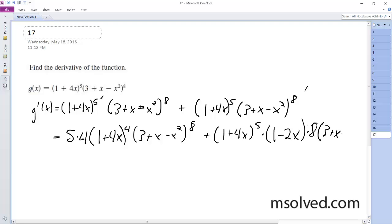And then this becomes 3 plus x minus x squared raised to the 7th. And I don't know how far we want to multiply this out, so I'll put, let's see here, so 20.